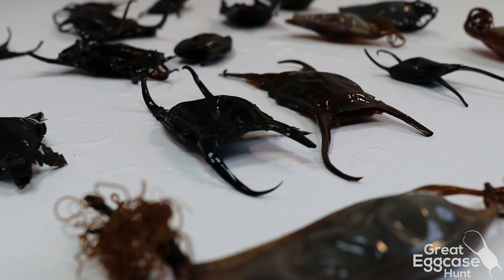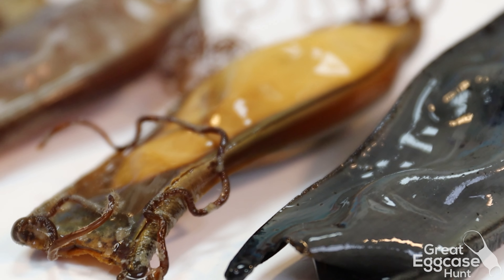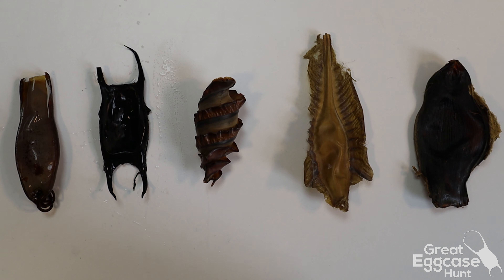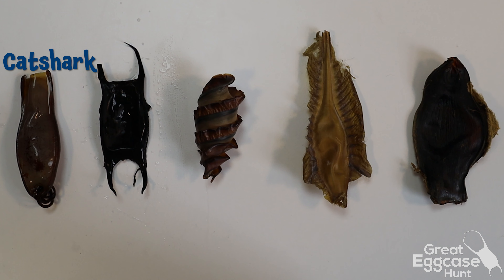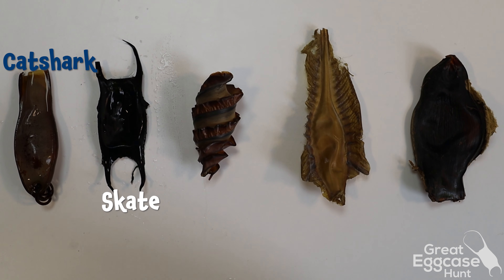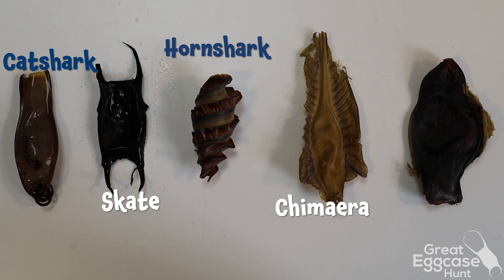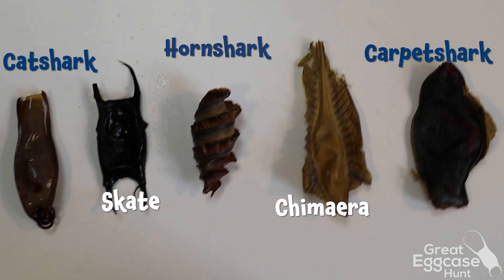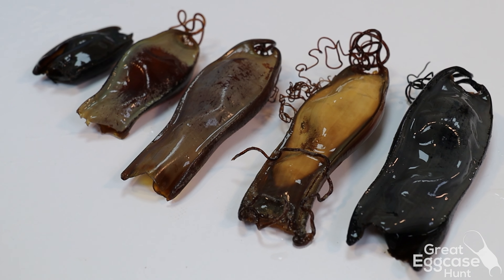There are a few key features to look for when identifying your egg case. First, work out the form. Is it a cat shark? A skate? A horn shark? A chimera? Or a carpet shark? Then you move on to the features.